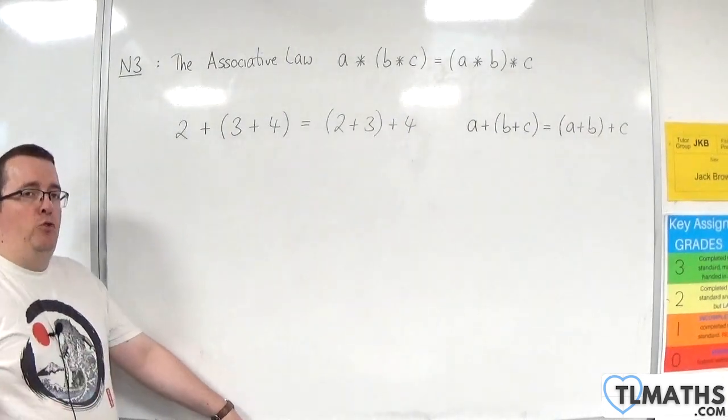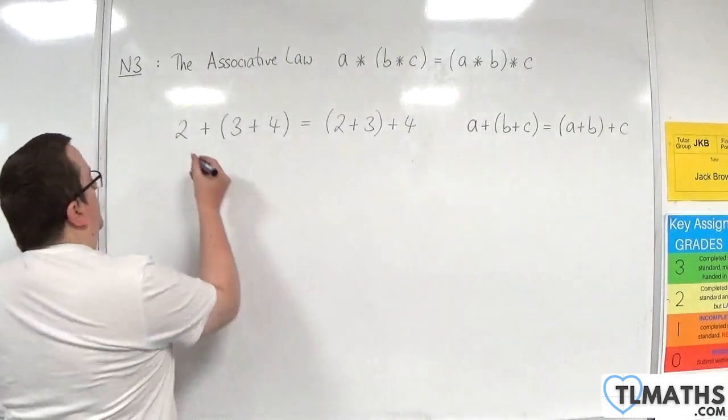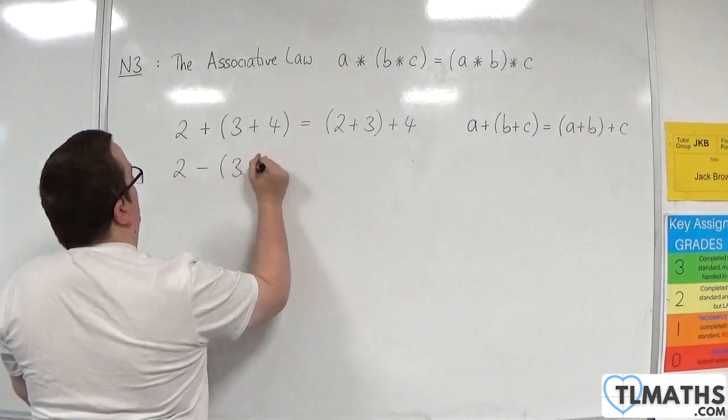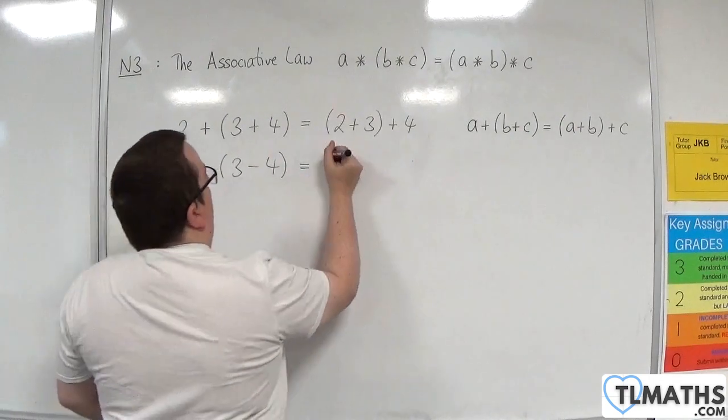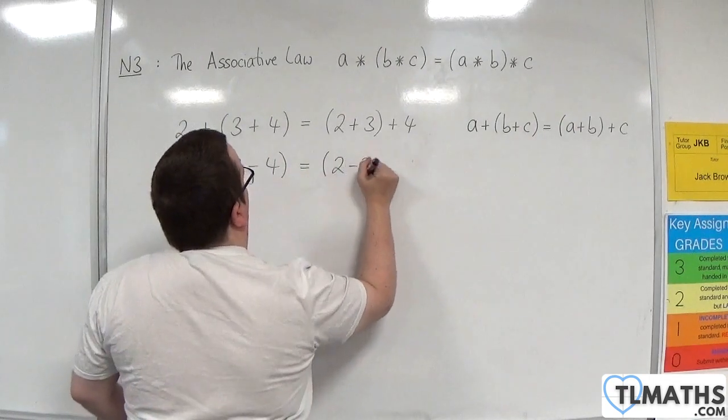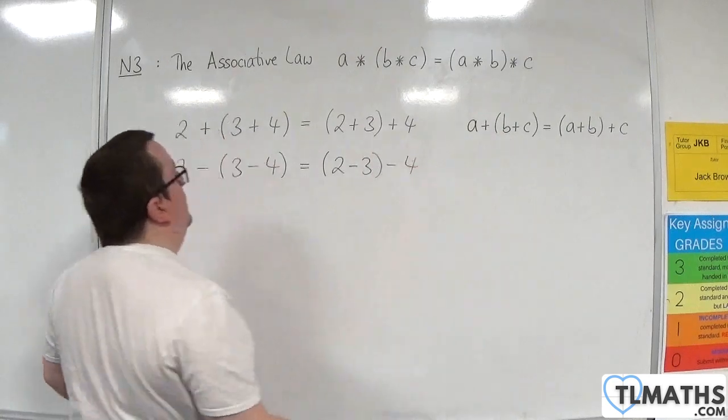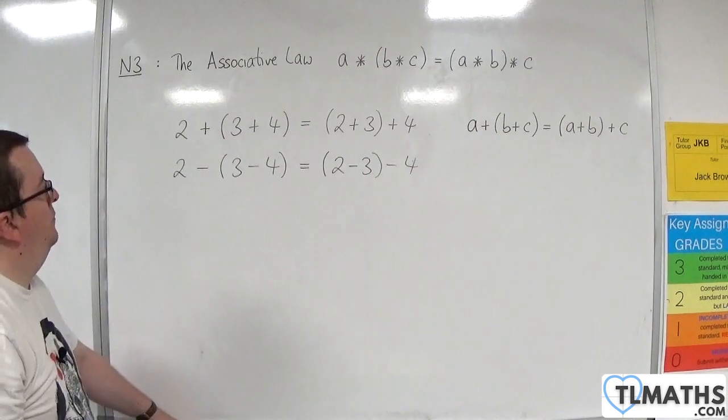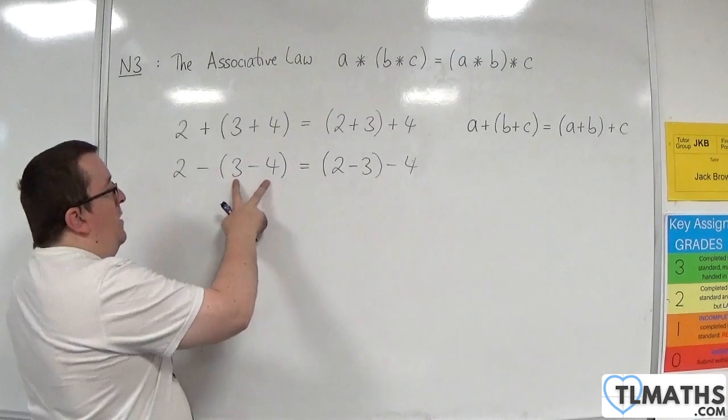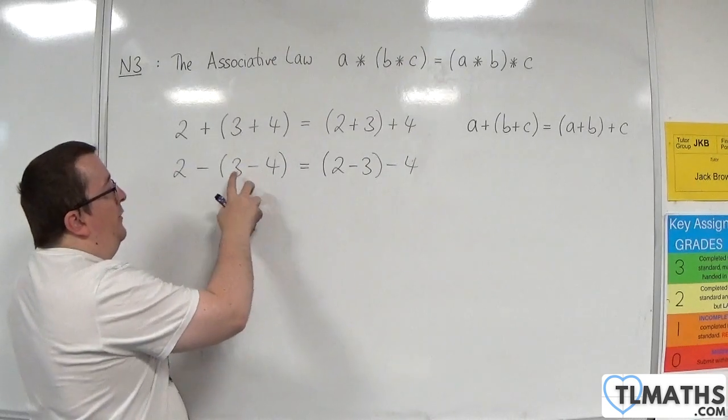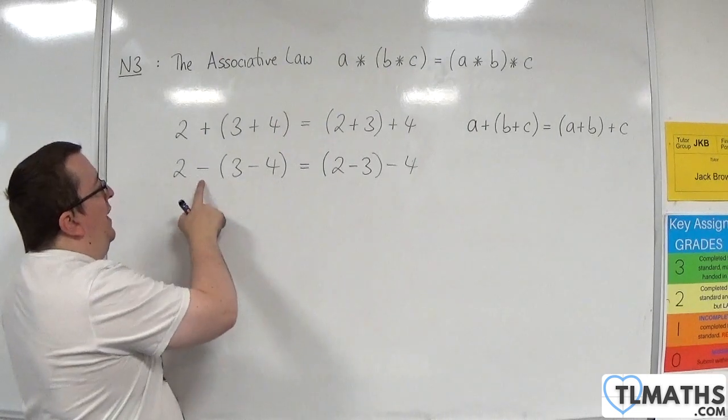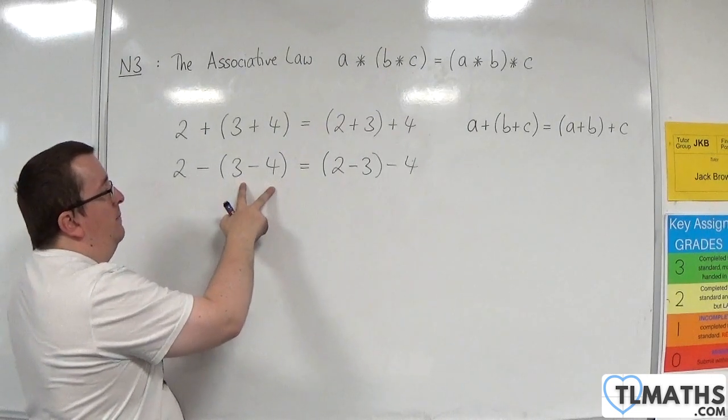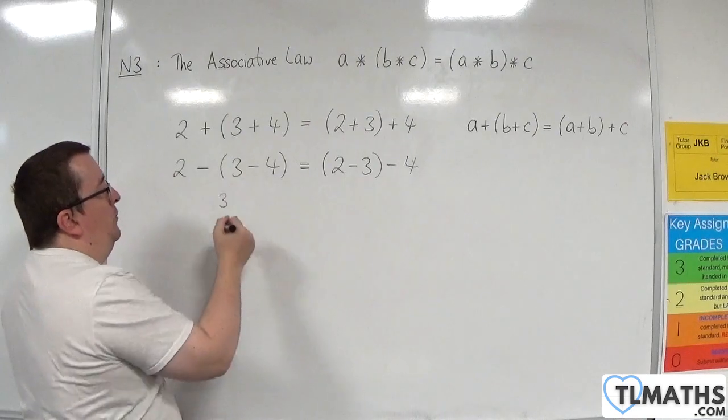What about subtraction? Well, 2 take away 3 take away 4, with 3 take away 4 in a bracket, is equal to 2 take away 3 take away 4. Now, is this true? Well, the bracket, remember, is telling you to do that first. So 3 take away 4 is minus 1. 2 take away minus 1 is 3. So the left-hand side is 3.